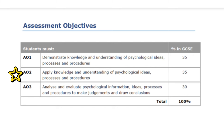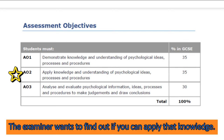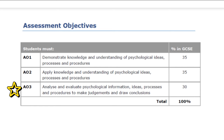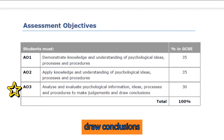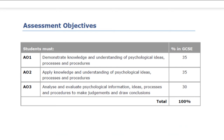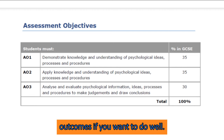Then assessment objective two: apply knowledge and understanding of psychological ideas, processes, and procedures. This takes the required skill level up a notch. We're still talking about psychological ideas, processes, and procedures, but now the examiner wants to find out if you can apply that knowledge. And then assessment objective three: analyze and evaluate psychological information, ideas, processes, and procedures to make judgments and draw conclusions. You need to ensure that you've covered all of those outcomes if you want to do well.